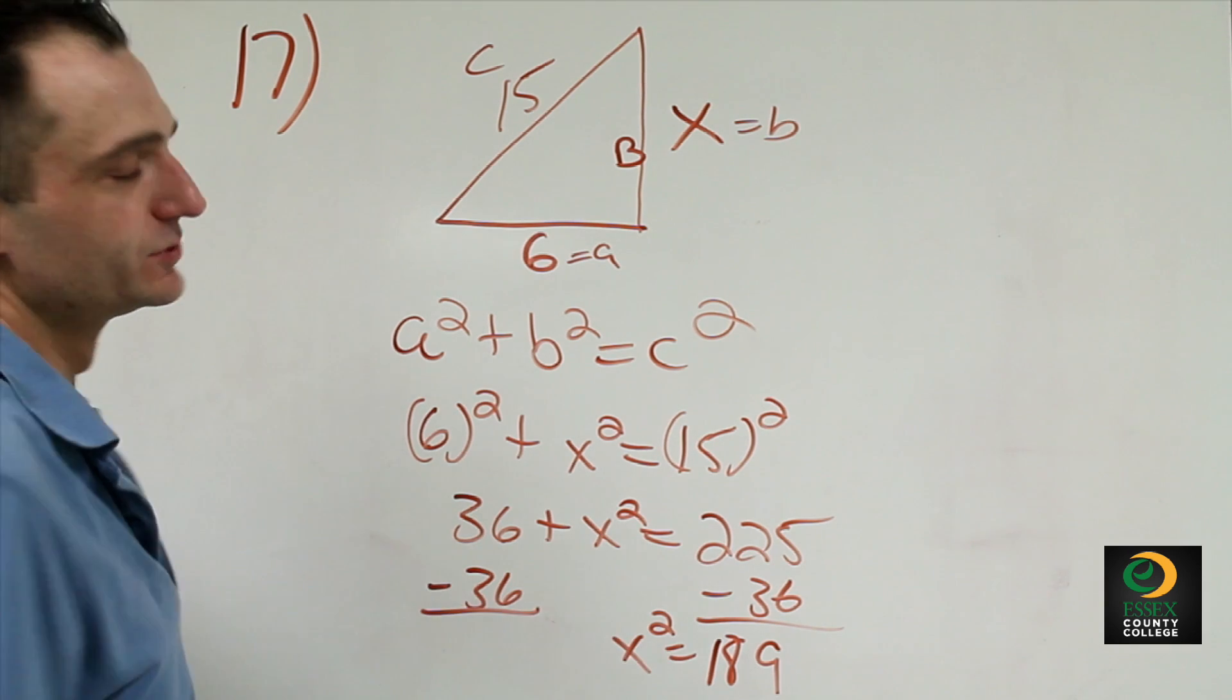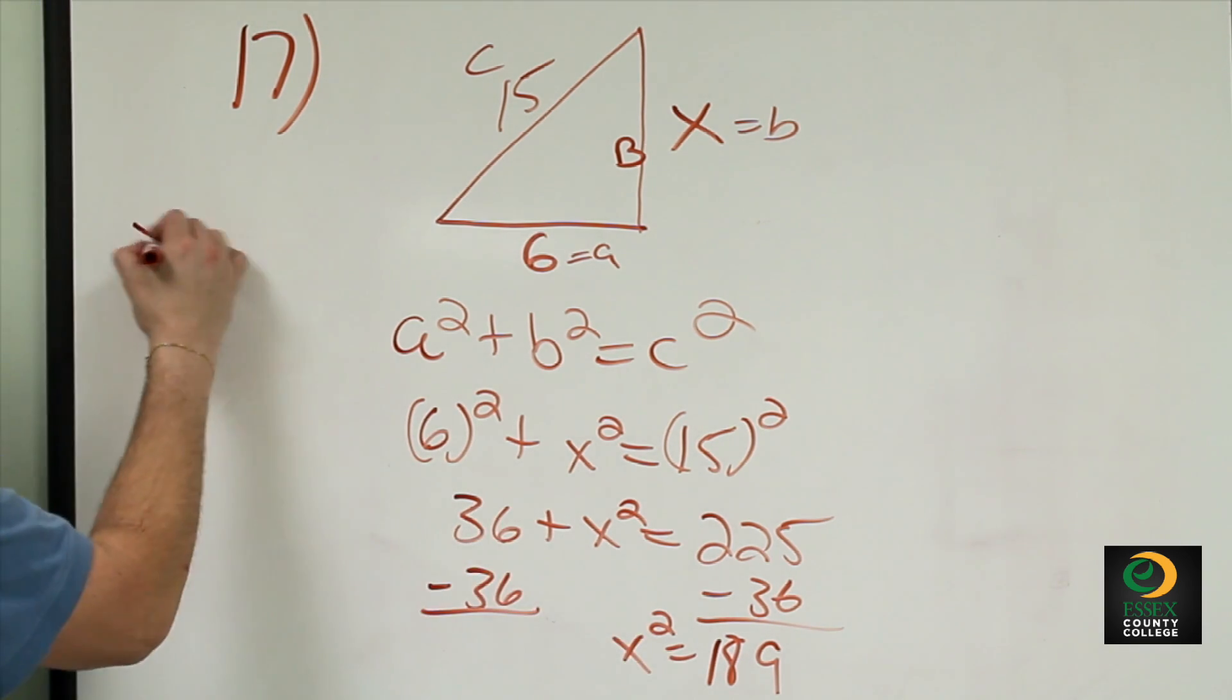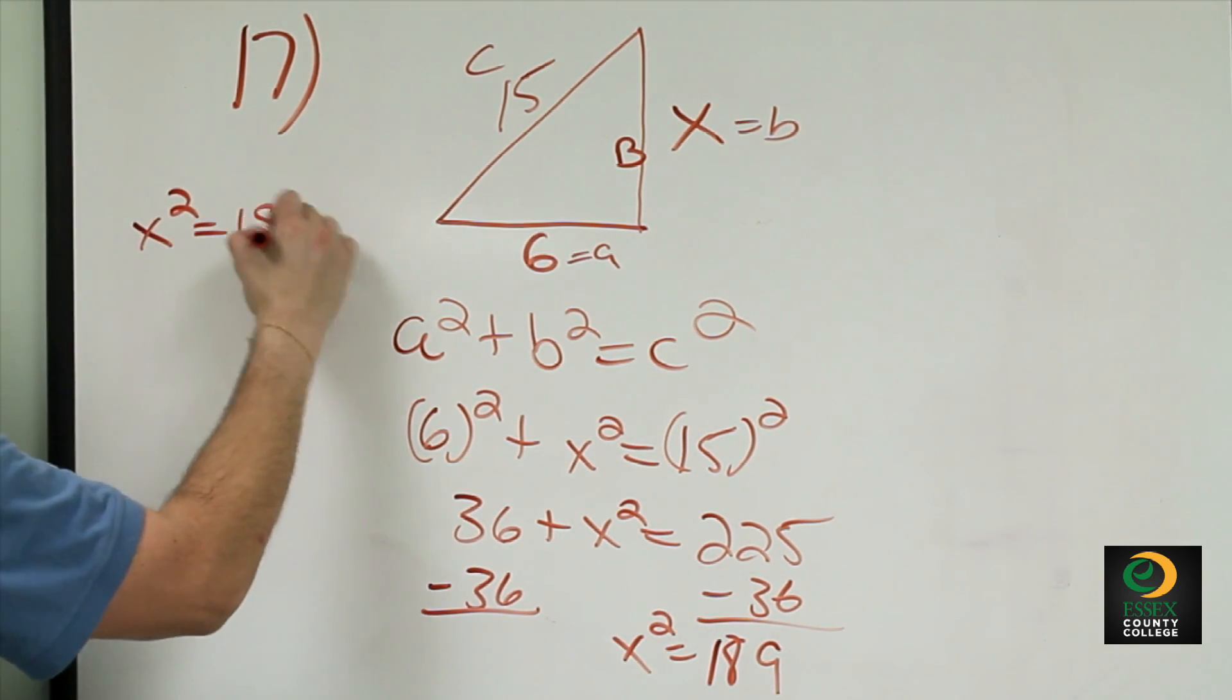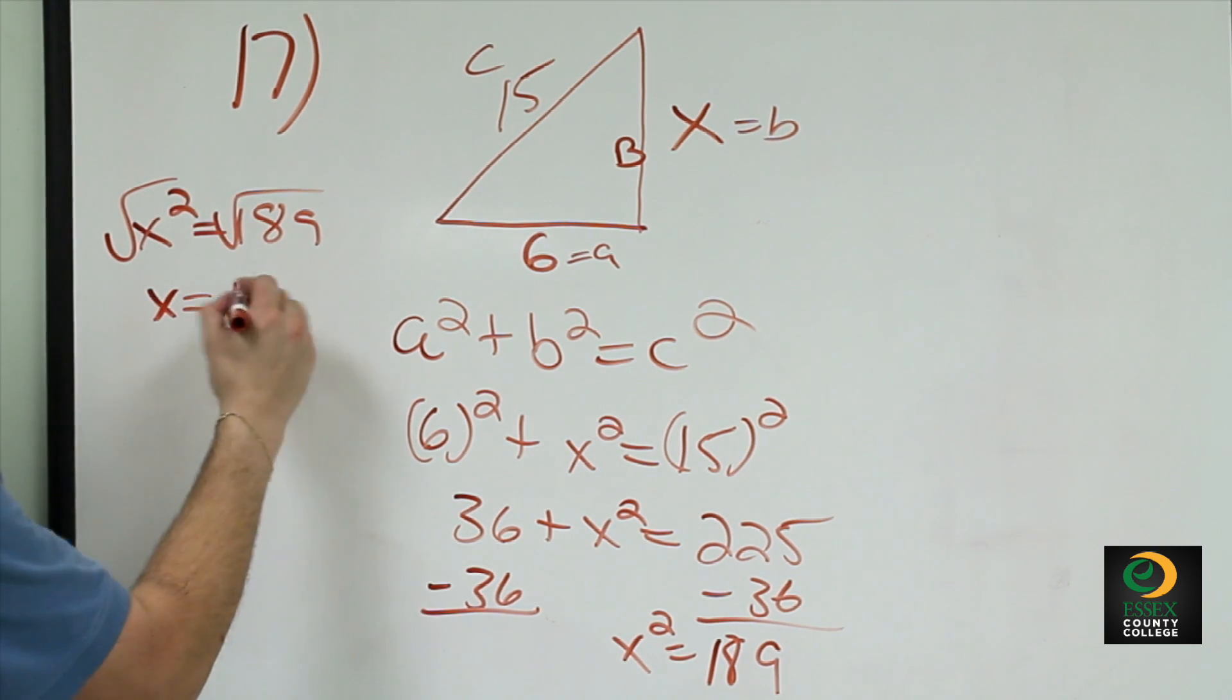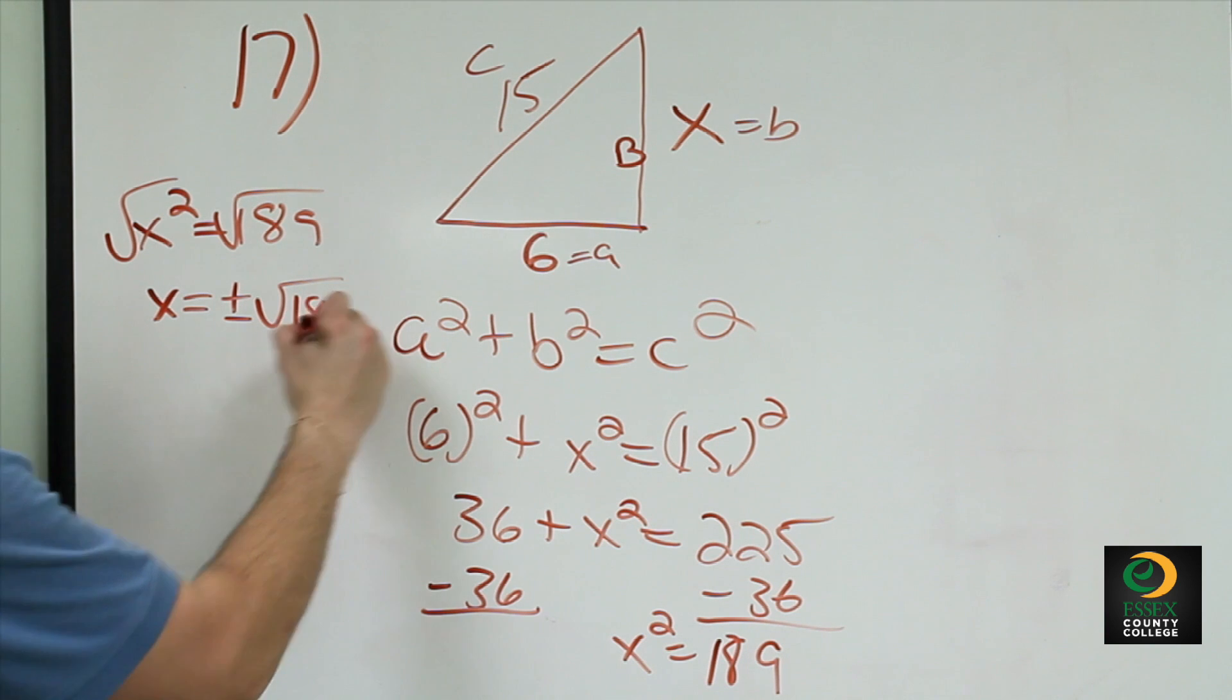So we have x squared equals 189. The simplest way to do this is we take the square root of both sides of the equation. So we're just left with x is equal to plus or minus the square root of 189.